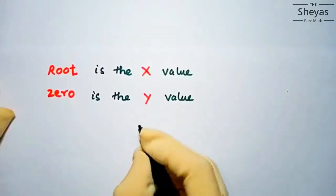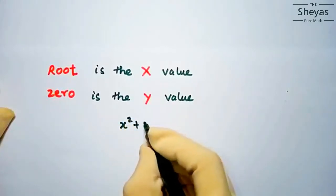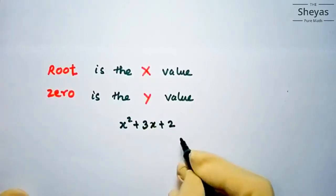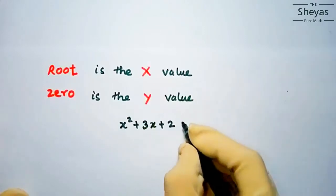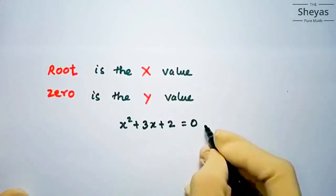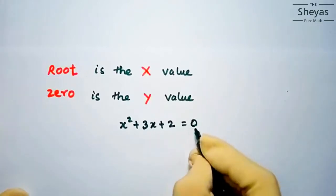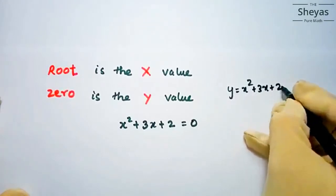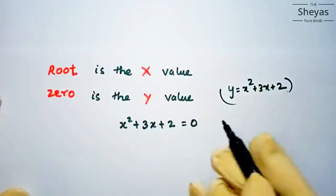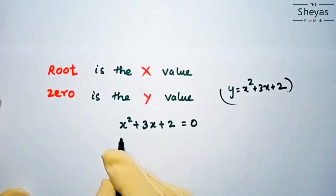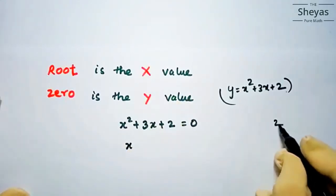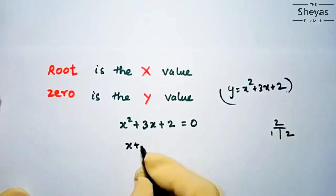For example, take the polynomial x squared plus 3x plus 2. This is a quadratic polynomial and we equate it to zero — we are making the y value zero. So we have y equals x squared plus 3x plus 2, and we set y to zero to find the x value. When you factorize, you get x plus 1 and x plus 2.